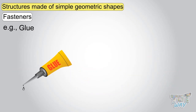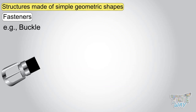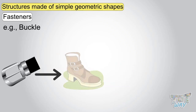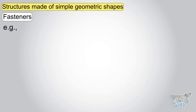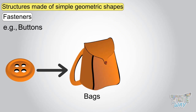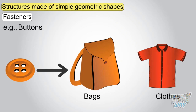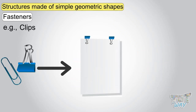Glue is used for joining papers. Buckles are a simple fastener used in shoes, bags, and purses. Buttons are simple fasteners used in bags and clothes. Clips are yet another fastener used with papers and cardboards.